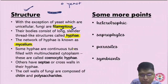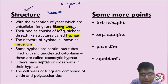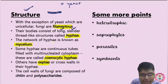Some hyphae are continuous tubes filled with multinucleated cytoplasm. Hyphae are of two types: septate hyphae and coenocytic hyphae. Coenocytic hyphae are continuous, while septate hyphae have separation of cells with septa. The cell wall contains chitin, which is a polysaccharide.